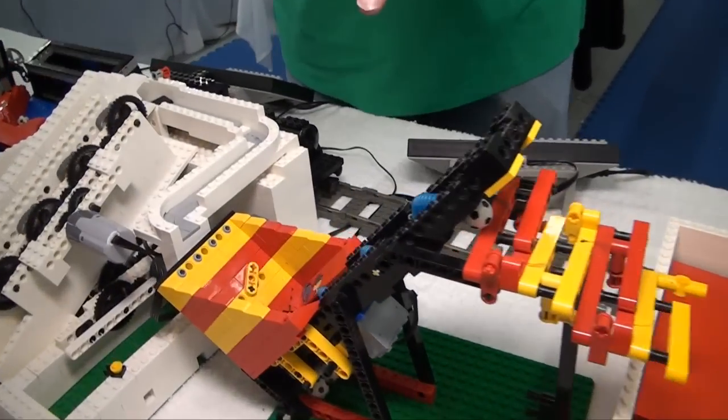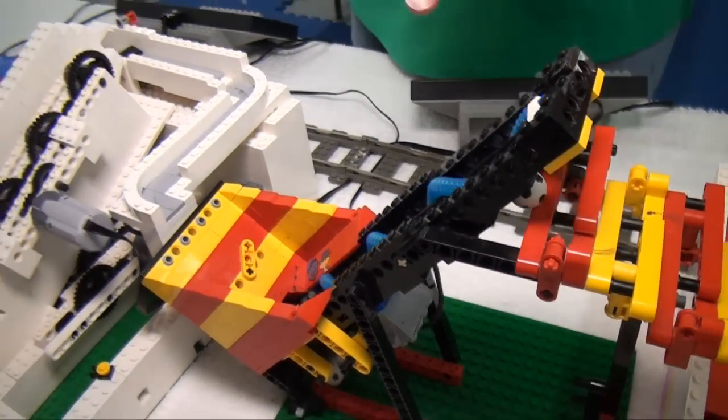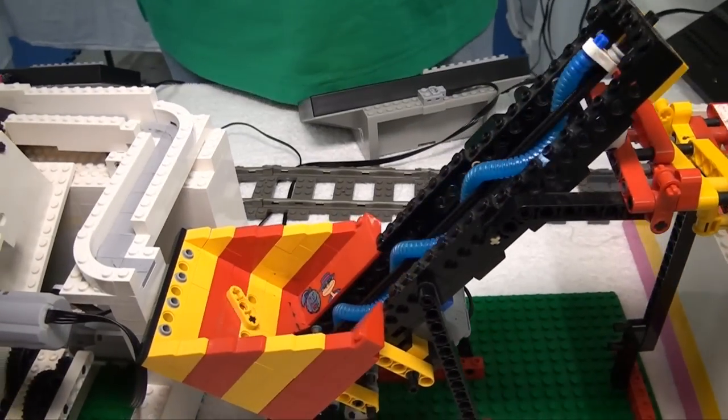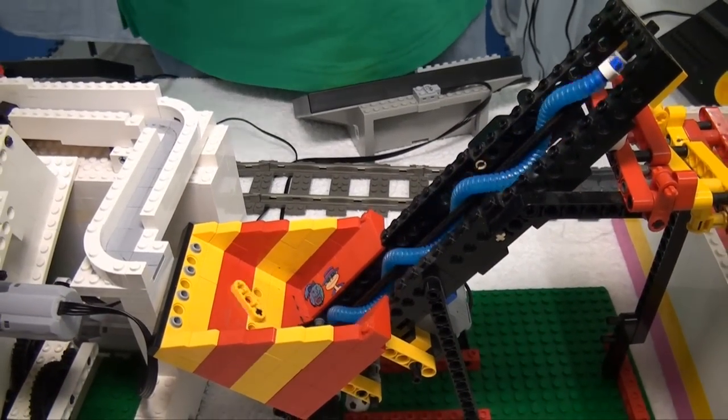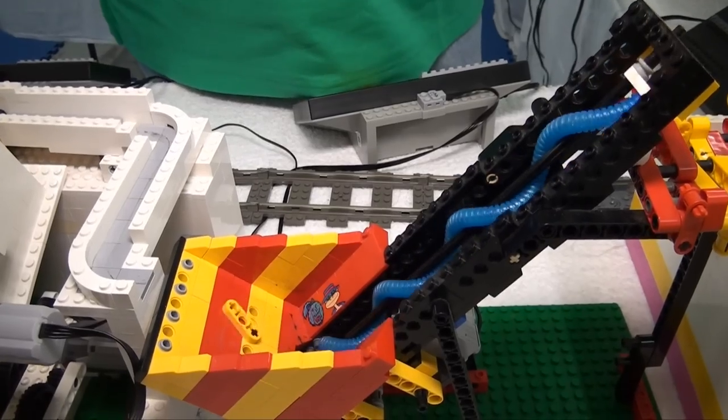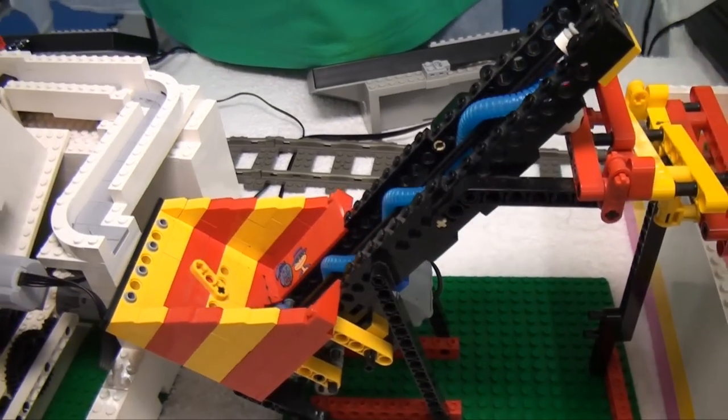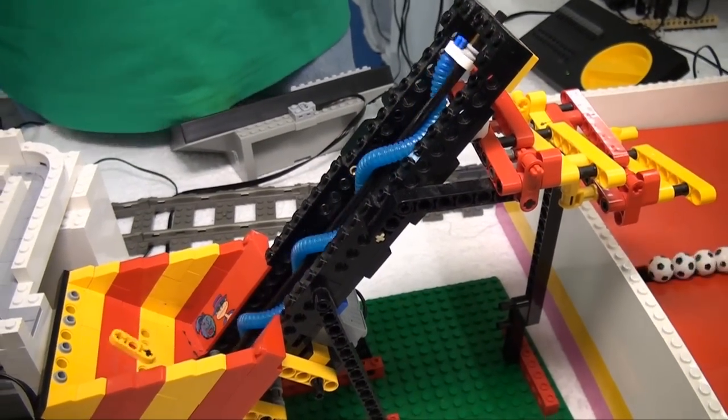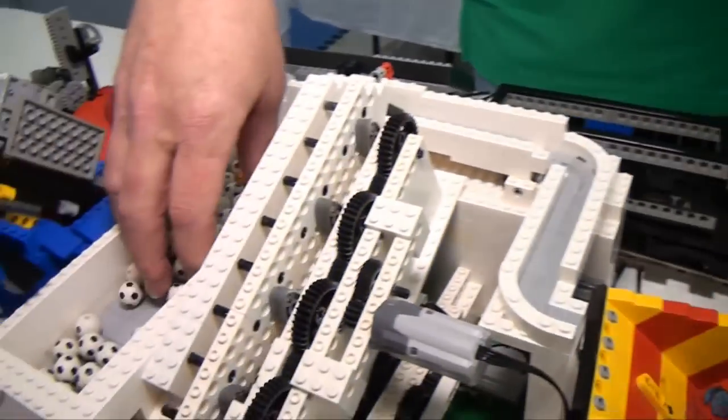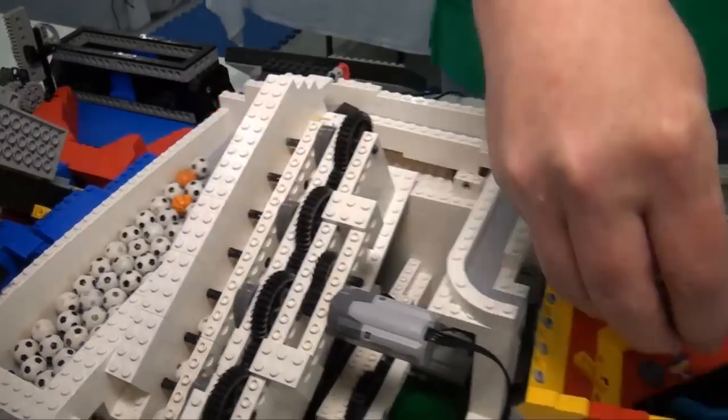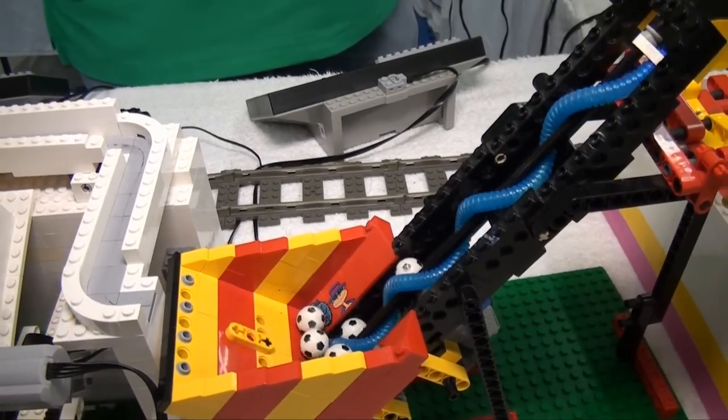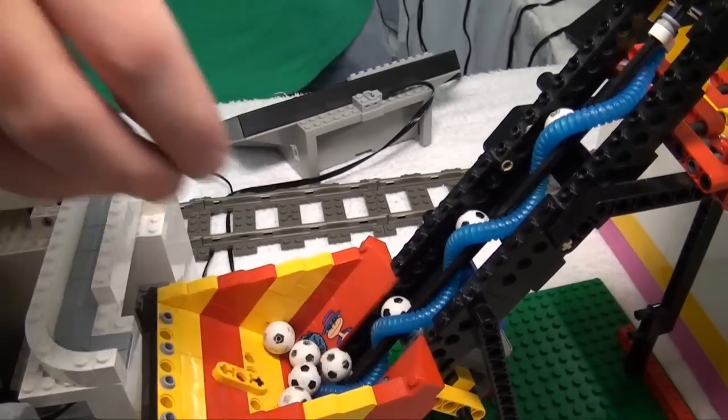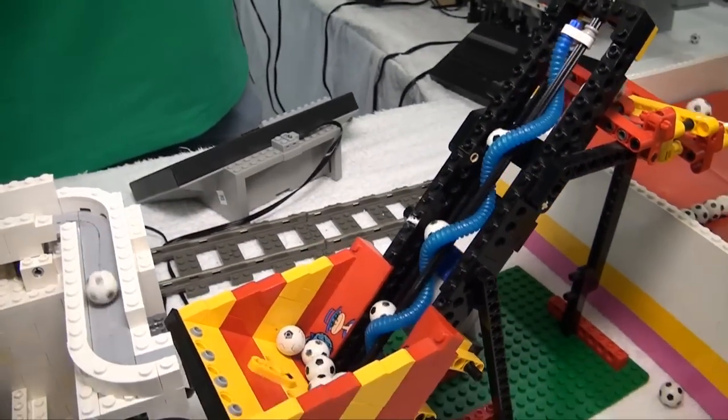So this is an example of another Philo module, using a flex piece as a screw, Archimedes screw, to bring the balls up. Of course, you're not getting any balls right now. There you go. You can see what it does now. A little manual help.